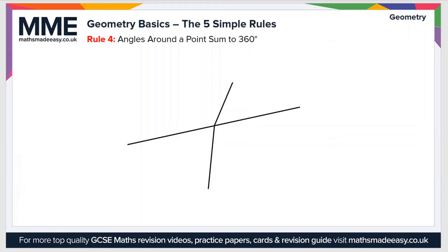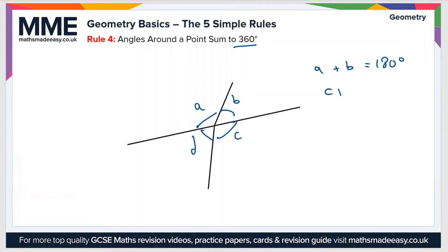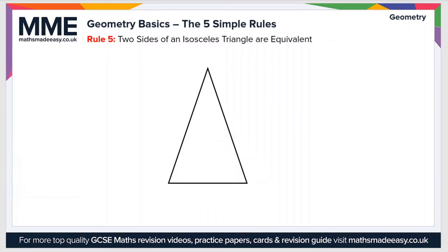Rule number four is an extension of rule three: angles around a point sum to 360 degrees. Looking at this diagram, all these lines come to one point in the center. If we label the angles a, b, c and d, we can see that a and b are on a straight line, so a plus b equals 180 degrees, and c plus d equals 180 degrees. Therefore, a plus b plus c plus d equals 360 degrees.